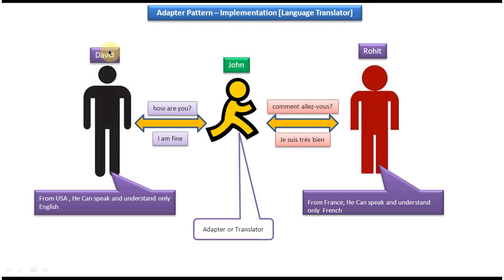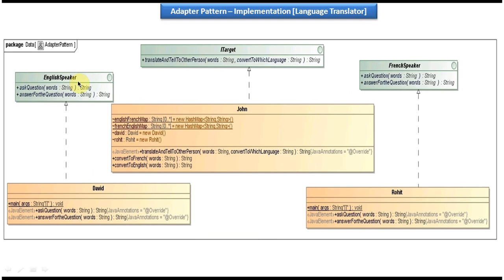David is the English speaker and Rohit is a French speaker. I have created two interfaces — one for English speaker and one for French speaker. The English speaker interface has two methods: ask question and answer for the question. These two methods are abstract methods. The David class implements the English speaker interface and provides implementation of ask question and answer for the question. Like that, the French speaker interface also has two abstract methods — ask question and answer for the question — and the Rohit class implements the French speaker interface.